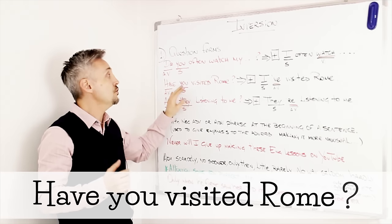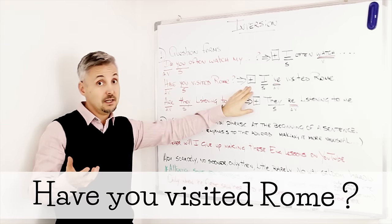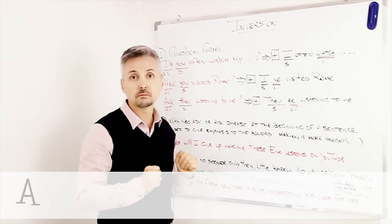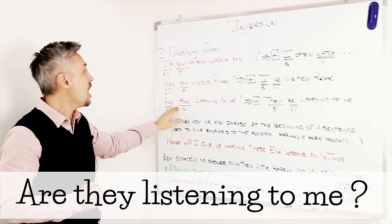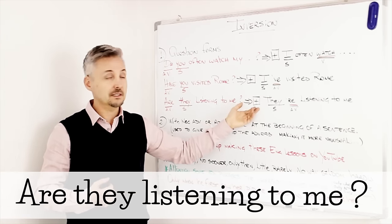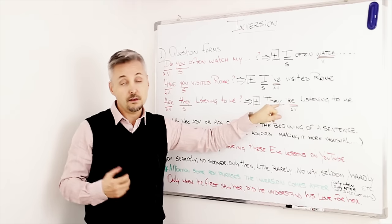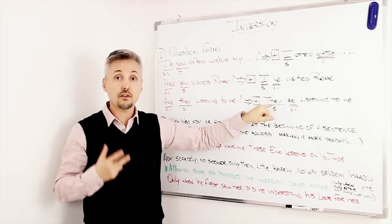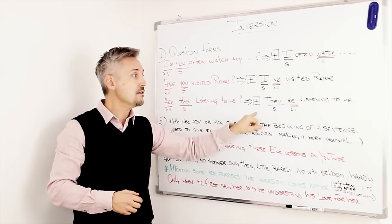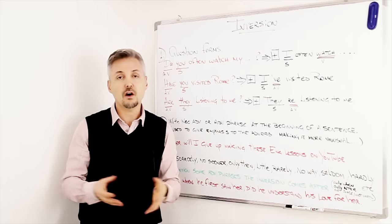So, with the present perfect. Have you visited Rome? Here is the inversion. The positive sentence would be, I've, auxiliary verb have, I've visited Rome. The other example that I've listed, are they listening to me? This is with the present continuous. The positive sentence would be, they are listening to me. So, they are, the auxiliary verb to be, are, in this case because it's the third person plural. The inversion comes, are they listening to me, in a question form. So, this is the first type and the most common type of inversion.